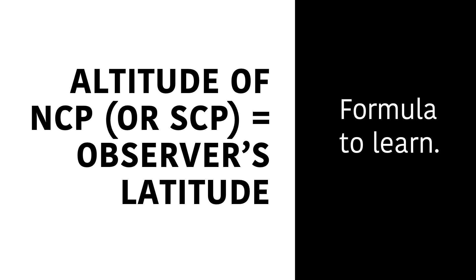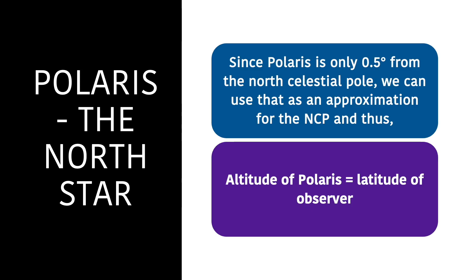Another formula you need to learn: the altitude of the North Celestial Pole, or the South Celestial Pole if you're in the southern regions, is equal to the observer's latitude. If you know the observer's latitude, you're able to calculate lots of different things. Since Polaris is only 0.5 degrees from the North Celestial Pole, we can use it as a sufficient approximation of the NCP. Thus, the altitude of Polaris is equal to the latitude of the observer.